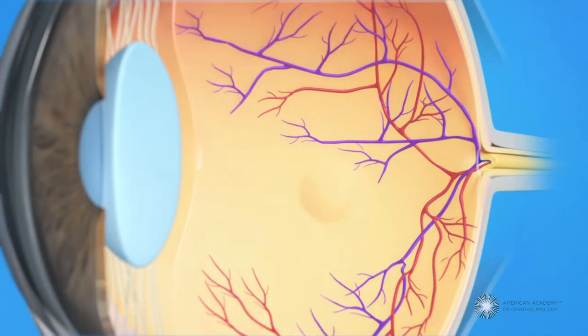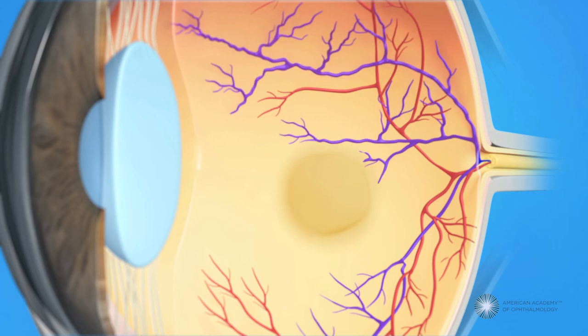With branch retinal vein occlusion, the small veins in your retina are blocked. This blockage could be caused by a blood clot, narrowed blood vessels, or pressure from a thickened artery crossing over the vein.